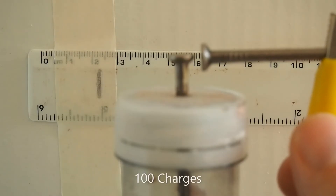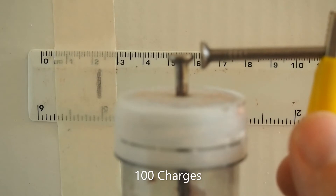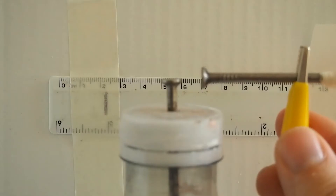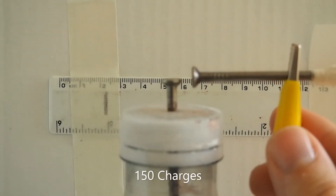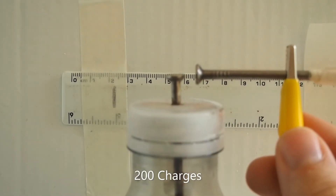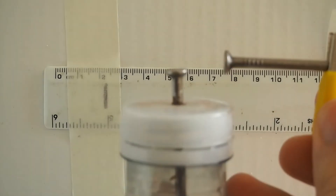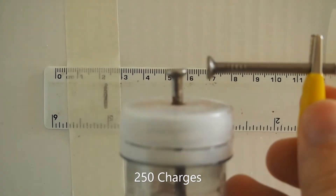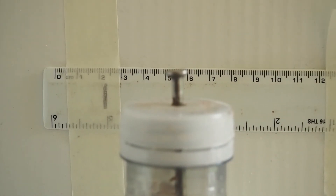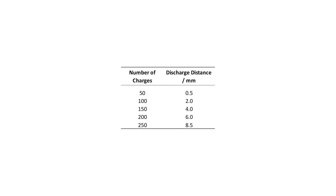Let's get started. I've put in a simple table here and I was measuring to about half a millimetre, because I could pause the frame and measure the distance that the nails were apart using that ruler on the back when the spark happened. We can see it was really quite small with just 50 charges and it went up to almost a centimetre with 250 charges.